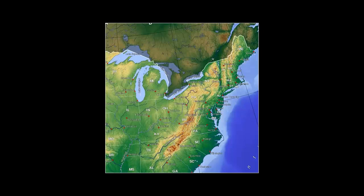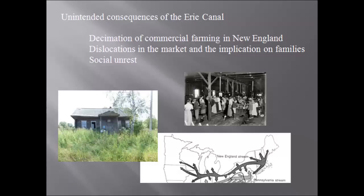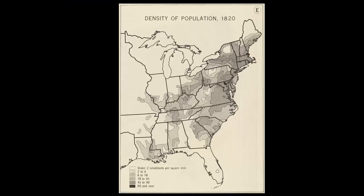And there are unintended consequences — unforeseen developments. It is going to render economically unviable farming in New England. We can call it the nullification of commercial farming in New England, with dislocations in the market and implications on families. If you're a New England farmer, Americans have been in New England about 200 years by now. Their population has grown, and so this land is being divided up by more and more people.